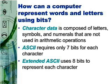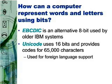A superset of ASCII called Extended ASCII uses 8 bits to represent each character. Extended ASCII represents the letter A as 0-1-0-0-0-0-0-1. Using 8 bits instead of 7 allows Extended ASCII to provide codes for 128 more characters than plain ASCII, including boxes, circles, and other graphical symbols. An alternative called EBCDIC, Extended Binary Coded Decimal Interchange Code, is used mainly by older IBM mainframe computers. Unicode uses 16 bits and provides codes for over 65,000 characters, a real bonus for representing the alphabets of multiple languages.